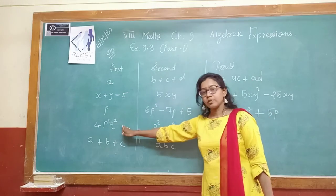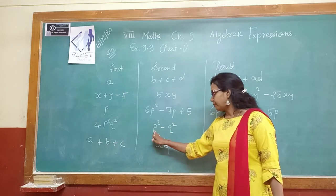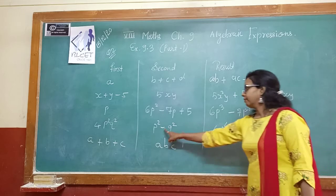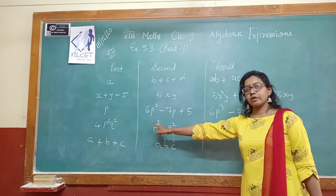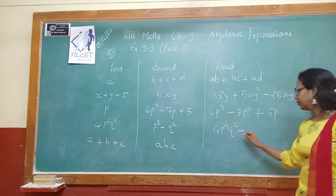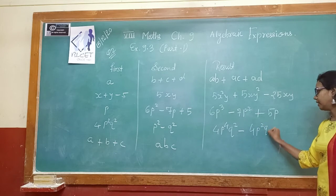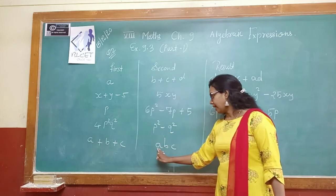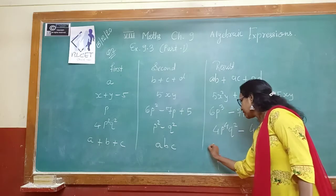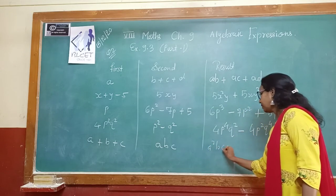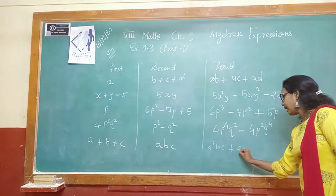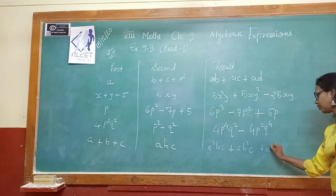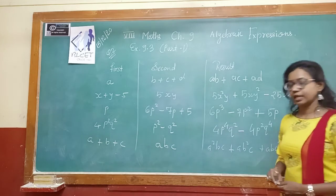Next is (4p² + 4) multiplied with q². So the result is 4p²q² + 4q². Then (a + b + c) multiplied with abc: a × abc gives a²bc, then b × abc gives ab²c, and c × abc gives abc². So this way we can complete the table.